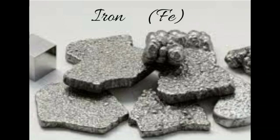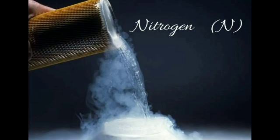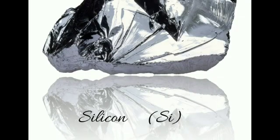Seventh is nitrogen, with atomic number seven, and it occupies 0.1% of the known universe. Eighth is silicon, with atomic number 14, and it is available at 0.07 in the known universe.